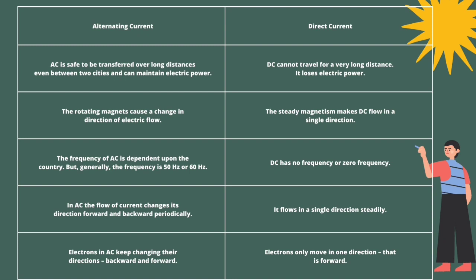The frequency of AC depends on the country where it is used, but generally ranges from 50 Hz to 60 Hz. In direct current there is no frequency, or we can call it zero frequency. In AC, the direction of current flow changes forward and backward periodically, while in direct current it flows in a single direction steadily.